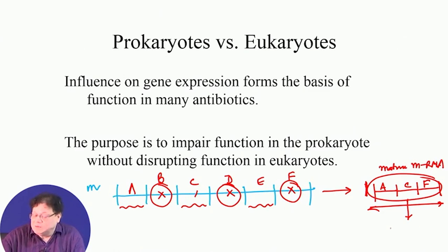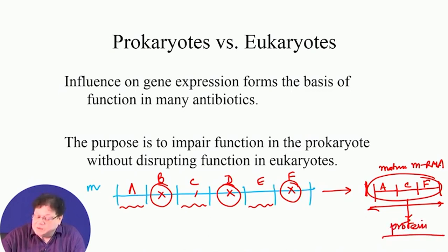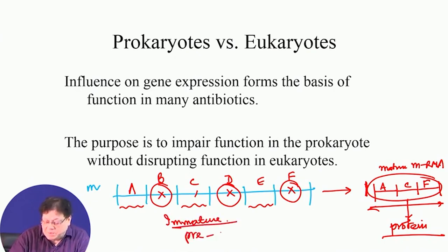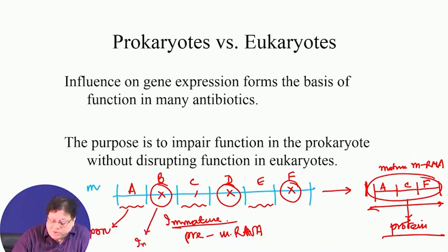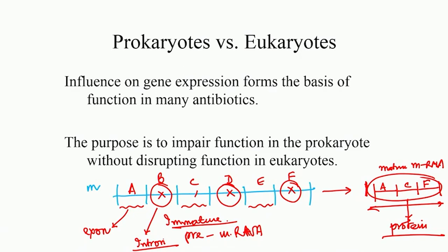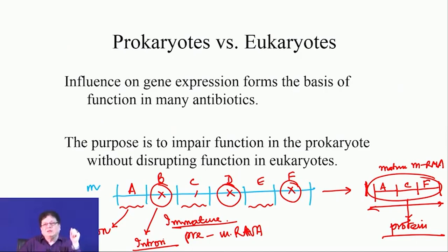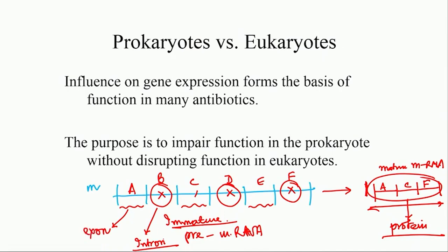From the mature mRNA, the machinery can synthesize the protein. The original unprocessed form is called immature or pre-mRNA, and the processed form is the fully functional mRNA. The functional parts are called exons and the non-functional parts are called introns. So a pre-mRNA contains both introns and exons, and to make the actual mRNA that will be translated into protein, you have to take the introns out and add all the exons one after another.